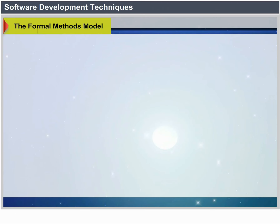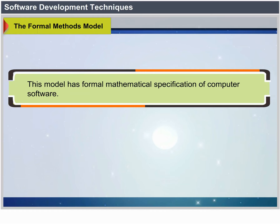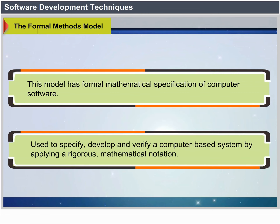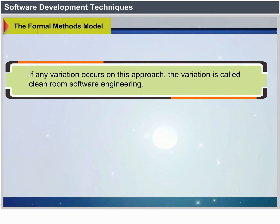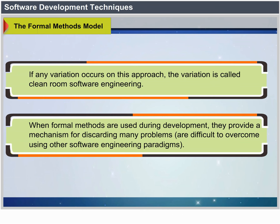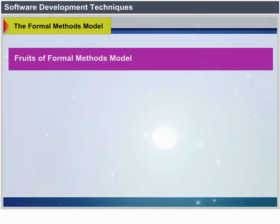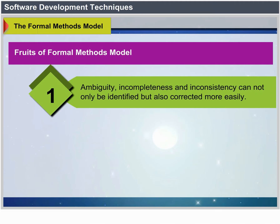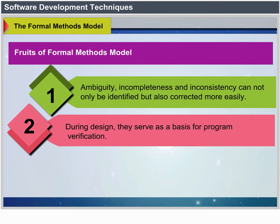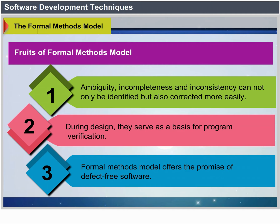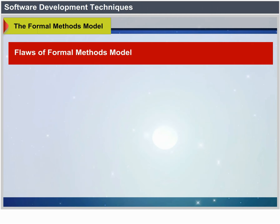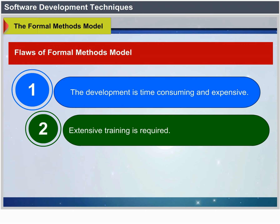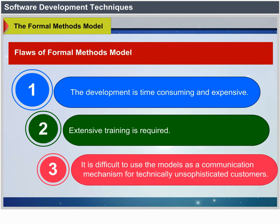The Formal Methods Model involves formal mathematical specification of computer software, used to specify, develop and verify a computer-based system by applying a rigorous mathematical notation — a variation called clean room software engineering. Advantages: ambiguity, incompleteness and inconsistency can be identified and corrected more easily; formal methods serve as a basis for program verification; and they offer the promise of defect-free software. Drawbacks: development is time-consuming and expensive, extensive training is required, and it is difficult to use as a communication mechanism for technically unsophisticated customers.